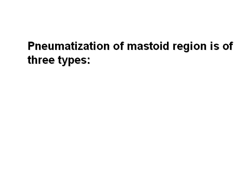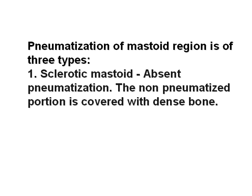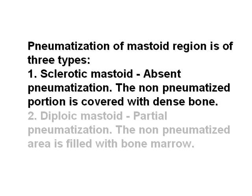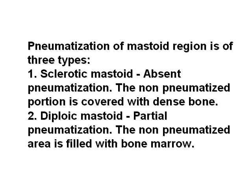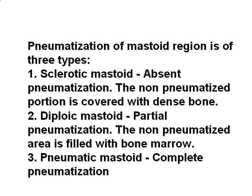Pneumatization of the mastoid region is of three types: sclerotic mastoid, which is absent pneumatization where the non-pneumatized portion is covered with dense bone; diploic mastoid, which is partial pneumatization where the non-pneumatized area is filled with bone marrow; and pneumatic mastoid, where there is complete pneumatization.